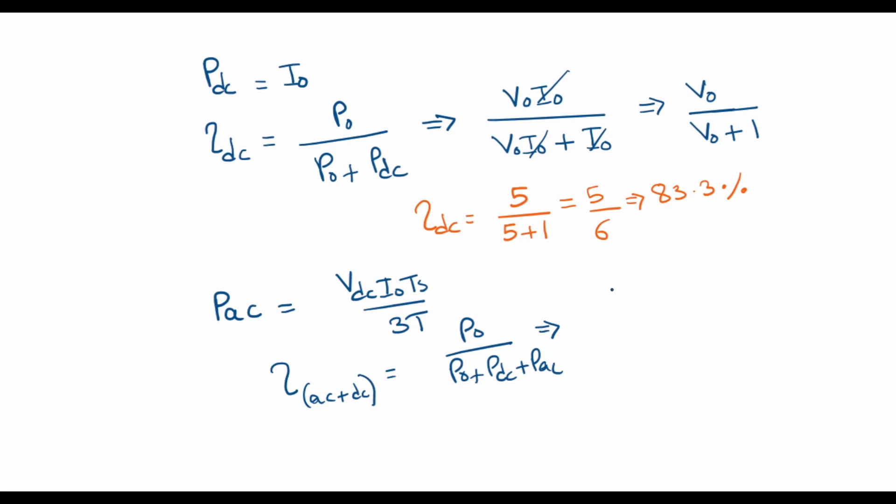And putting in the values of P0 and PDC and PAC, I can write, and here I put in the value of PAC which is VDC times I0 times TS divided by 3T. So I0 can cancel from the final expression and the final expression looks like this: V0 over V0 plus 1